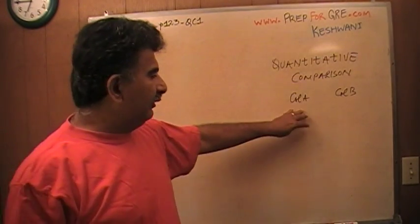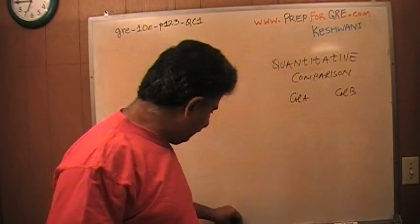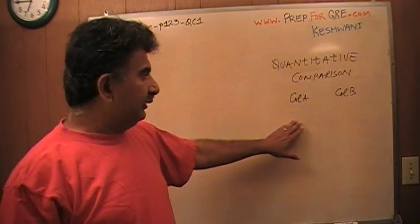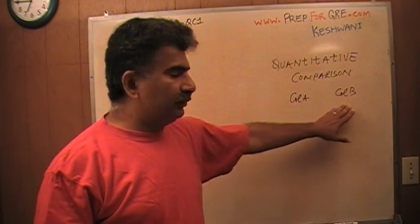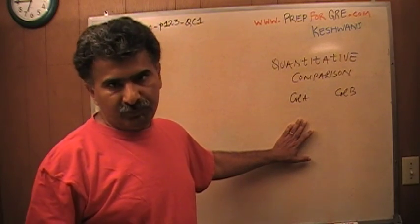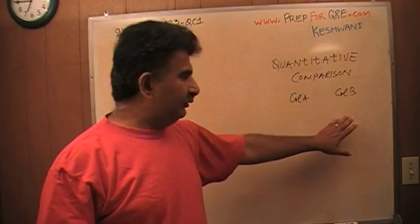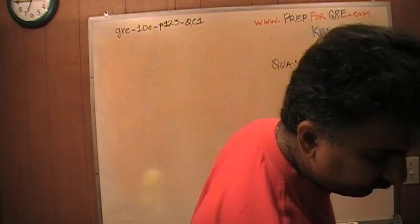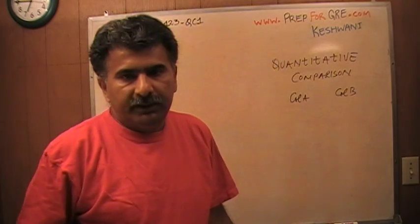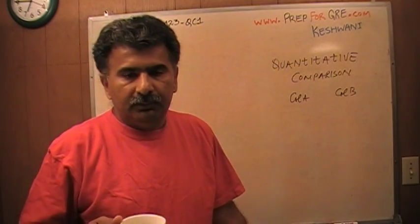If the quantity in column A is bigger, you are to pick answer choice A. If the quantity in column B is bigger, you choose answer choice B. If you feel the two quantities are equal to each other, answer choice is C. And if there is not enough information to determine which quantity is bigger, or if they are equal, if you cannot tell based on the information that is given to you, the answer is D.